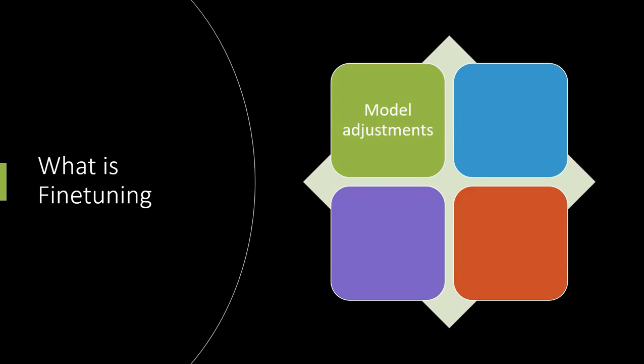Our very first question is: what is fine-tuning? In simple words, it is a process of making some adjustments to a model that is already trained on a large dataset to perform very specific tasks. This is very common in deep learning. Fine-tuning pre-trained models can give you much better results. One thing to remember is we are not fine-tuning the complete model — we are training it with a new dataset while keeping the weights of the pre-trained model fixed and updating with a smaller learning rate.